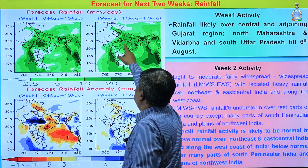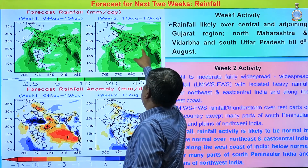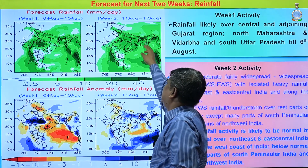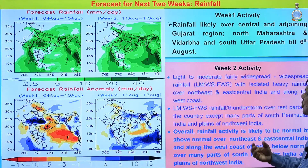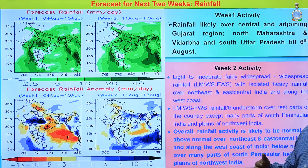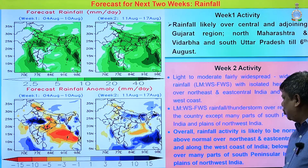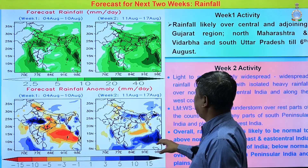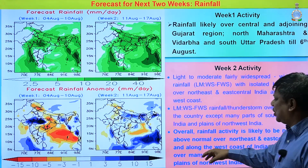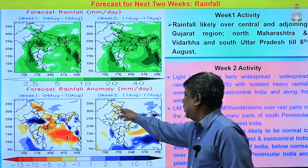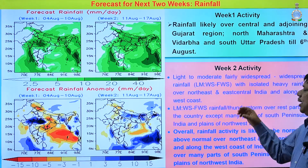In Week 2, rain will return to the southern peninsula region due to a probable low pressure and monsoon trough situating there, along with a probable cyclonic circulation. Northeast India and East-Central India will have good heavy rainfall, but South Peninsular India and parts of Northwest India will get only scattered or isolated heavy rainfall. Overall, rainfall activity above normal will be over northeast and East-Central India, while South Peninsular India and Northwest India will be below normal.